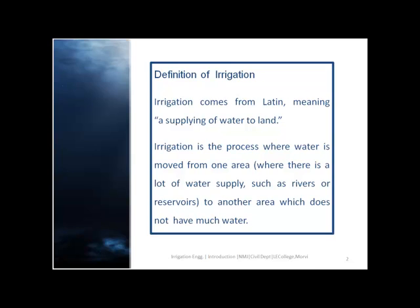What is the meaning of irrigation? Irrigation comes from Latin, meaning a supply of water to land. Irrigation is the process where water is moved from one area where there is a lot of water supply, such as rivers or reservoirs, to another area which does not have much water.